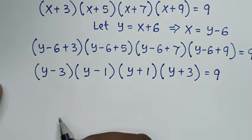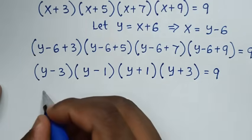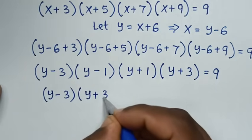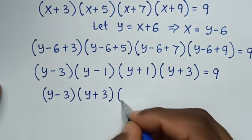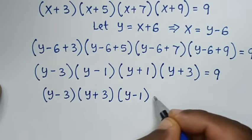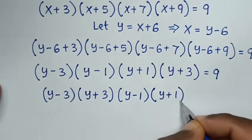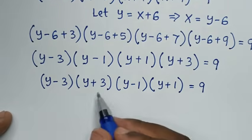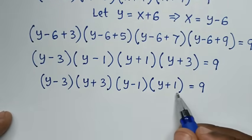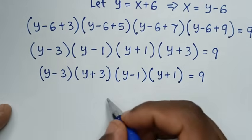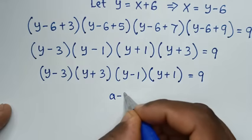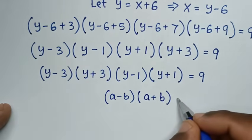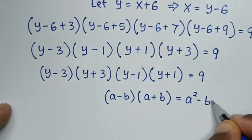Now, (y−3)(y+3) and (y−1)(y+1) are each in the form of difference of two squares. We apply the rule (a−b)(a+b) = a²−b².